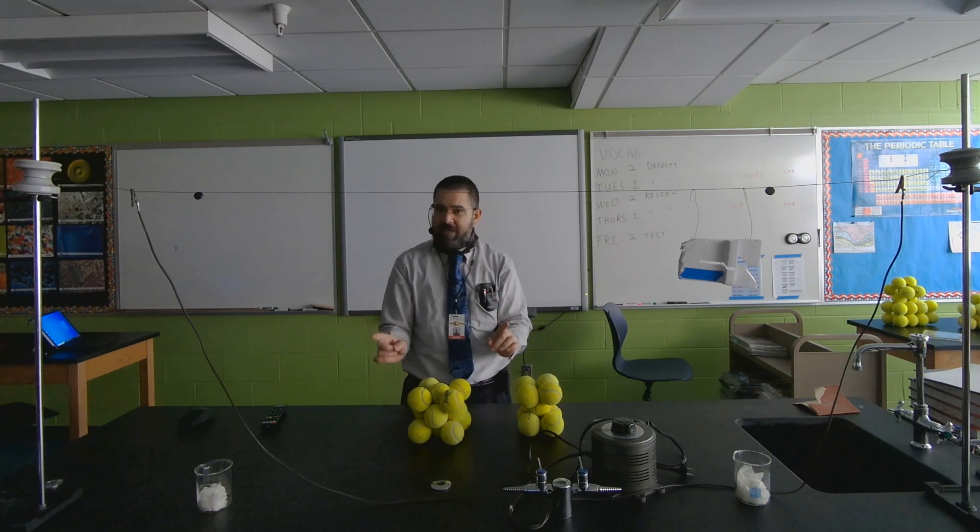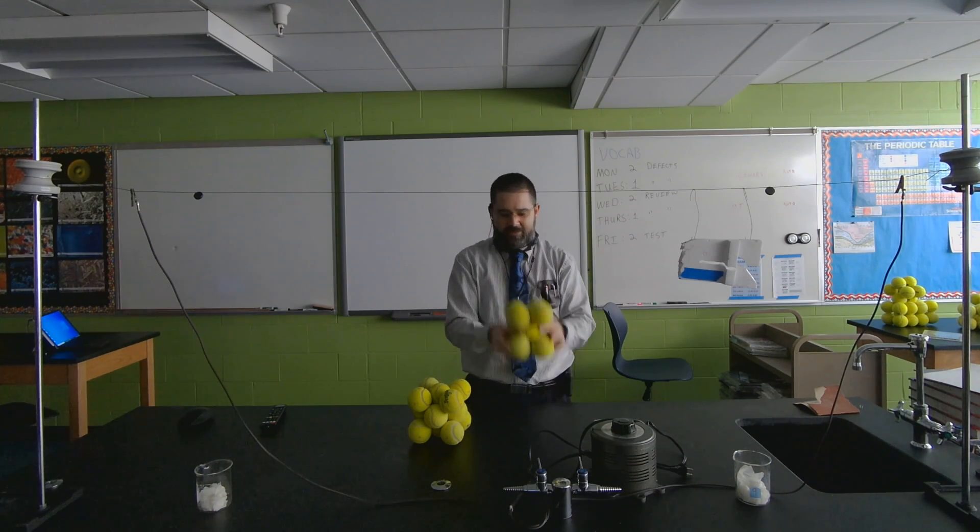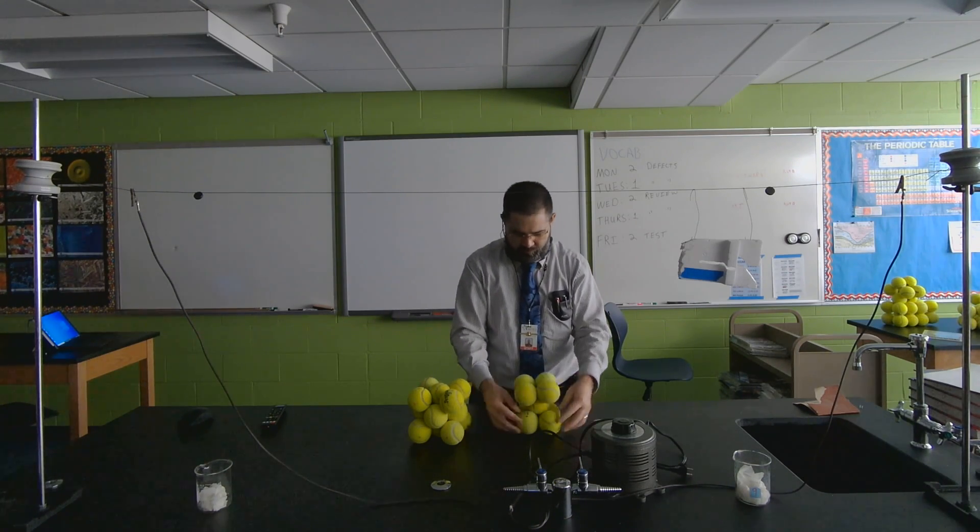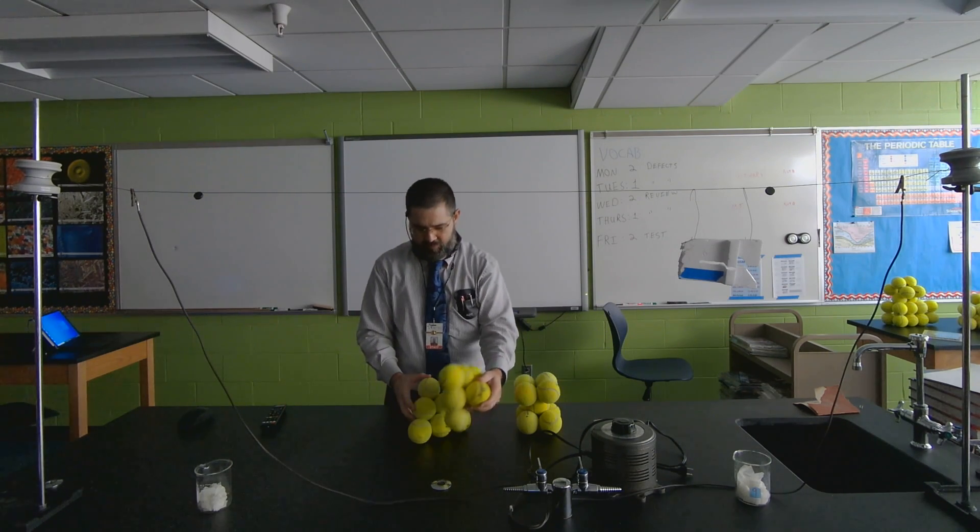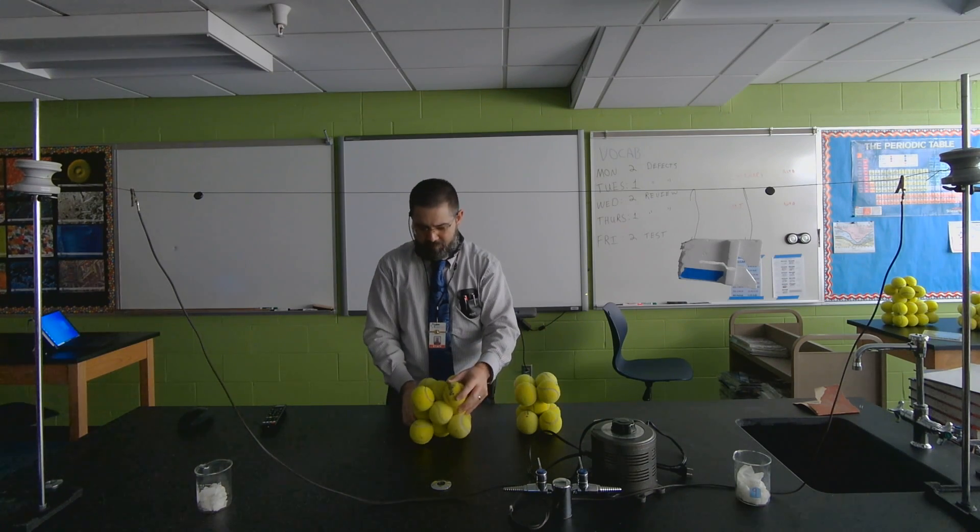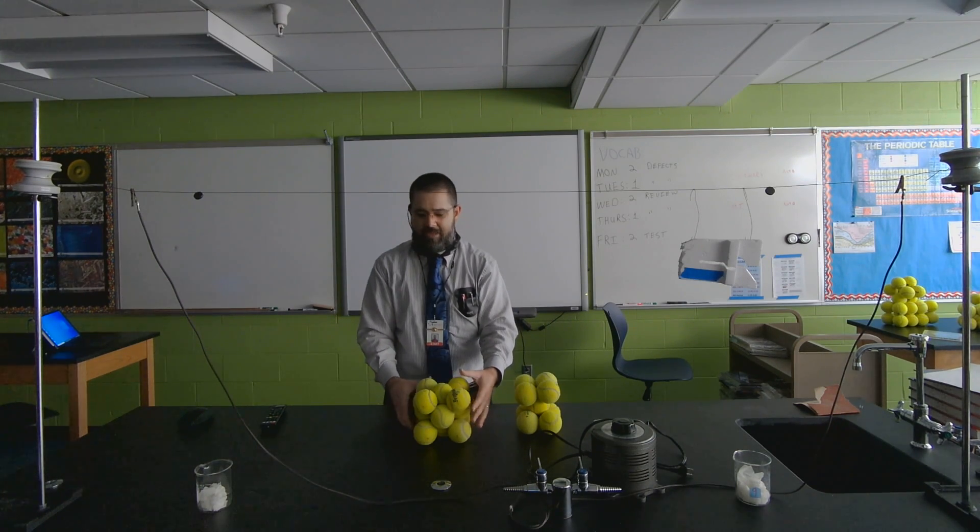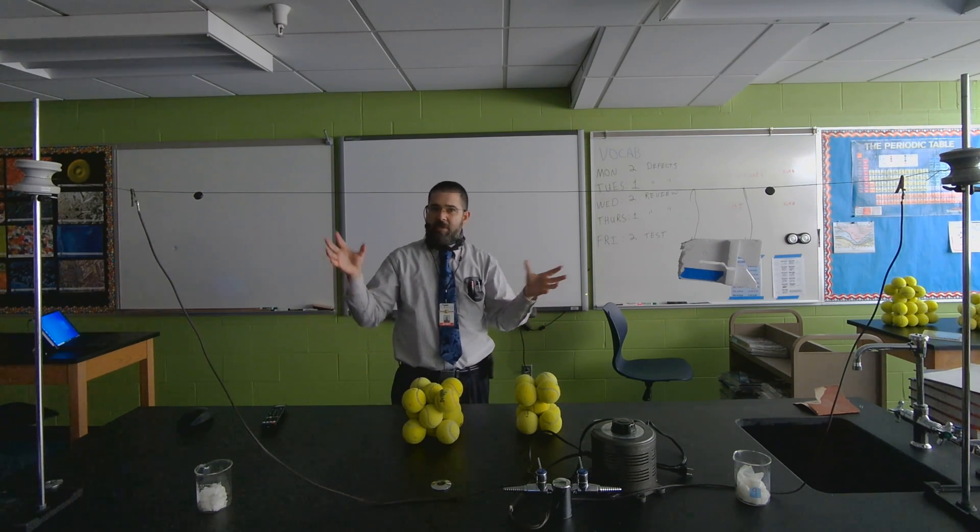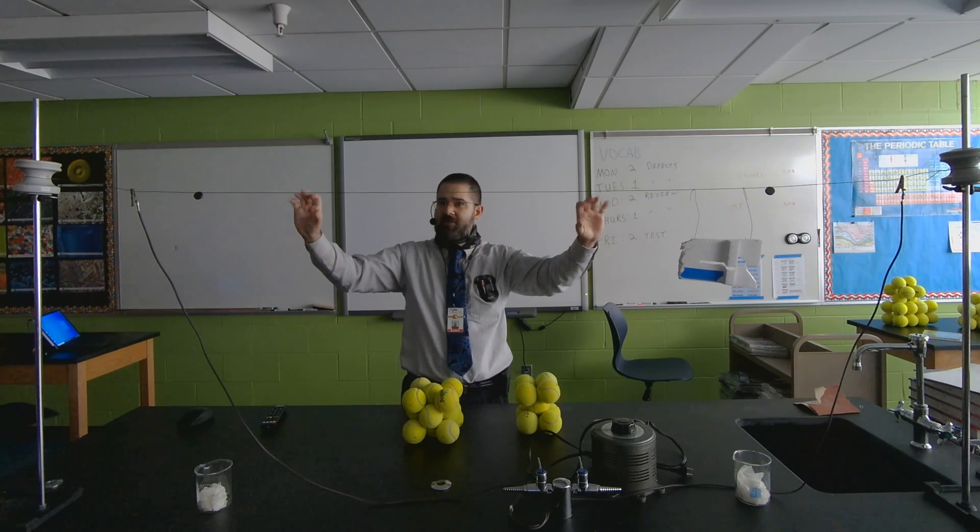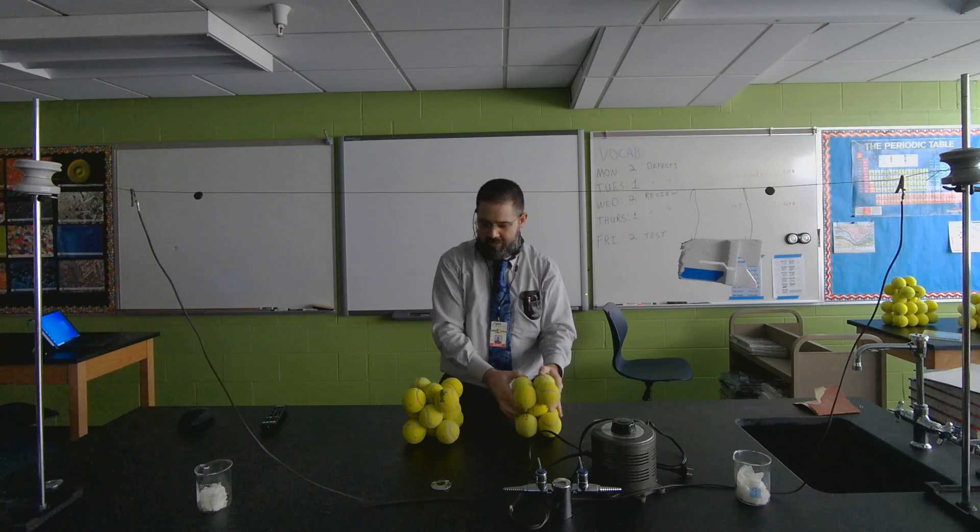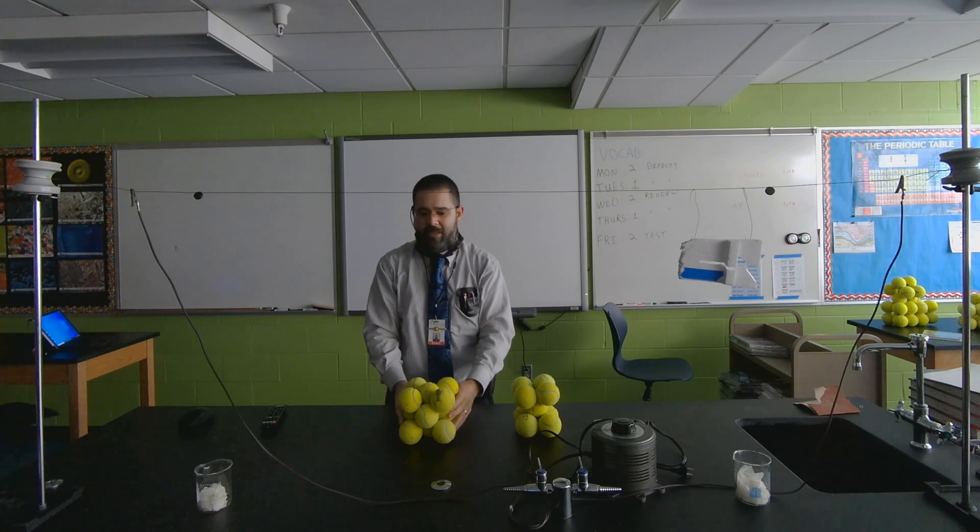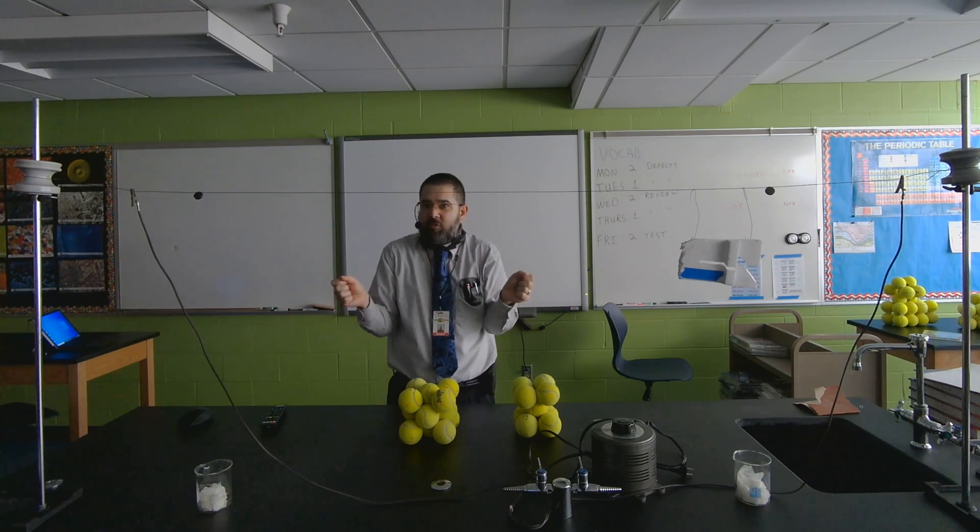Now look at the difference in atoms here. When it is in body center cubic, each crystal has one, two, three, four, five, six, seven, eight, nine atoms. When it is in face center cubic, we have one, two, three, four, five, six, seven, we have 14 atoms in each crystal. So this has a lot more atoms. Conservation of mass, we can't have atoms coming from somewhere else. The wire has to use all the atoms that it has in itself. And so because of that, because it's going from each crystal having this many to this many, those atoms get rearranged. There's not as many there. The wire will get shorter.